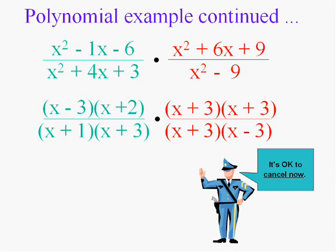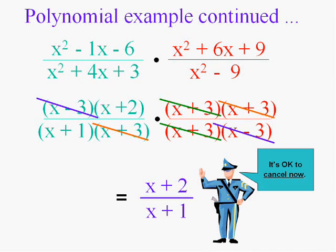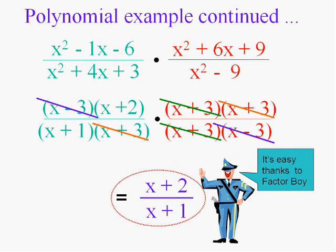I'm just looking for pairs in the top and the bottom. There's a couple of x minus threes. There's a couple of x plus threes. The other x plus threes. Note that you can do one above the other or one diagonal from the other, as long as something's in the top and something's in the bottom, and you can't cancel things that are added. And that's what's left: x plus two over x plus one. It's not that bad if you can factor.